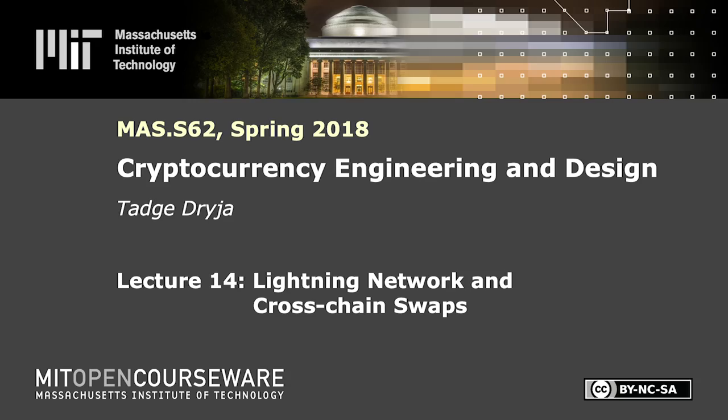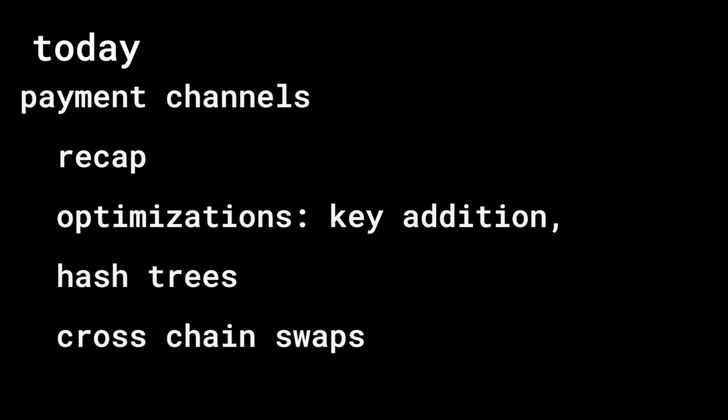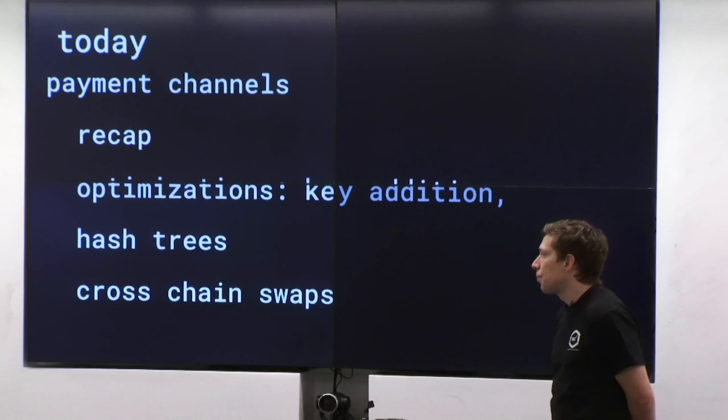Last class, I talked about payment channels and the Lightning Network. Today we'll talk a bit more about payment channels — we'll recap a little bit. We'll talk about some optimizations, one of which is key addition and the other is hash trees. And then we'll talk about cross-chain swaps, or cross-chain atomic swaps.